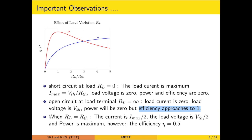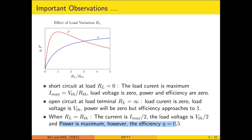When RL equals RTH, the current is Imax divided by 2, where Imax is defined as VTH upon RTH, and the load voltage is half of the supply voltage. The power is maximum as seen from the characteristics. However, the efficiency is exactly 0.5. These aspects will be dealt with in the coming slides with mathematical support.